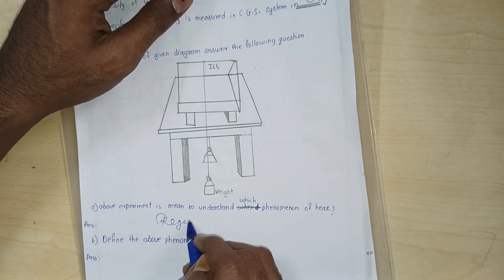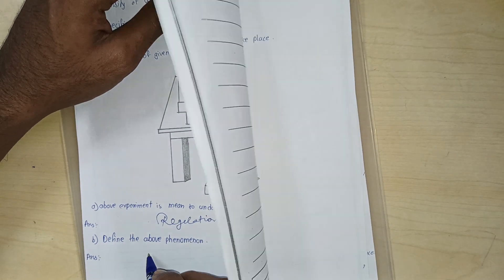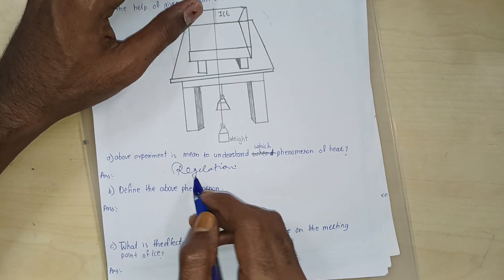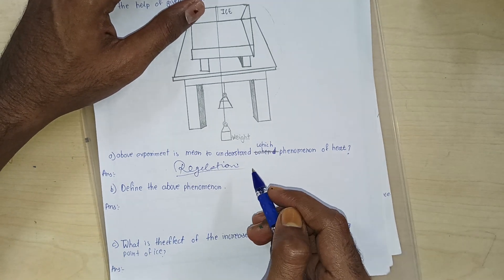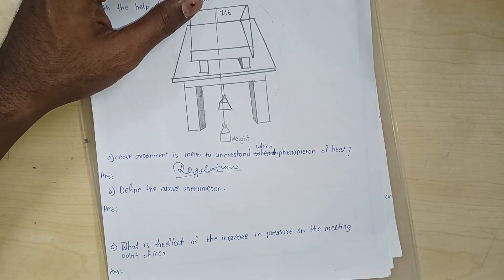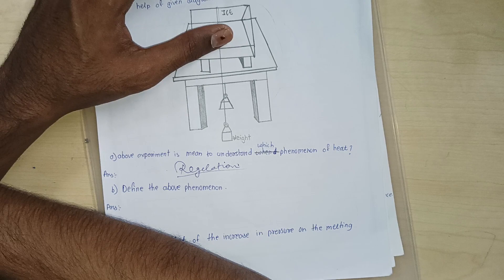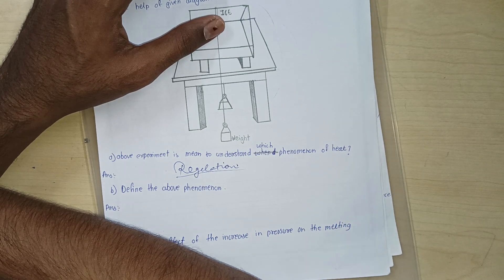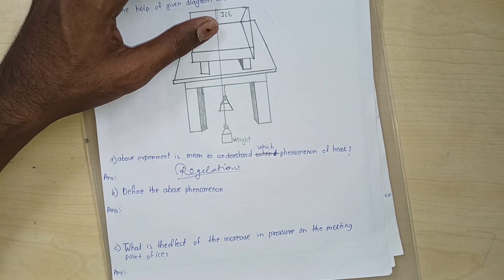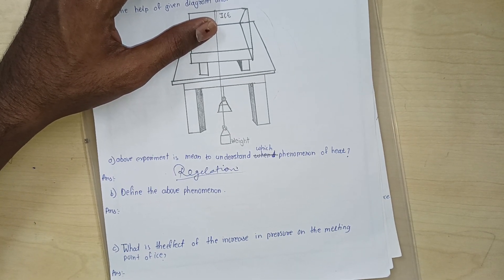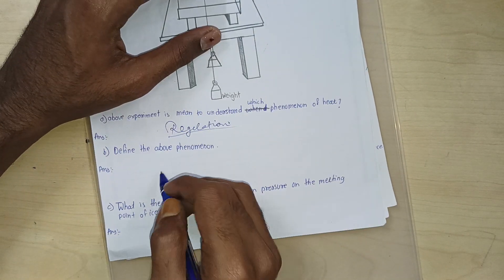Yes, full sentence if you write and then you write regelation. Define the above phenomenon. What do you mean by regelation? All right, you have to write in a statement, put it in the same way, you understand? What do you mean by this phenomenon? Regelation. We know the phenomenon in which the ice converts into liquid due to applied pressure and then converts into ice once the pressure is removed. Regelation, understood?